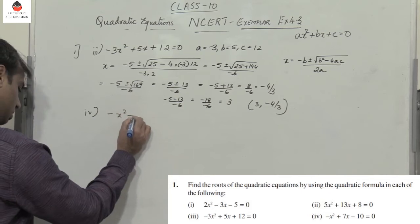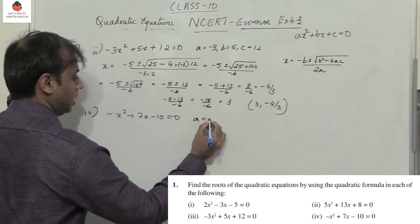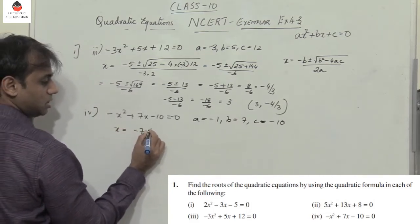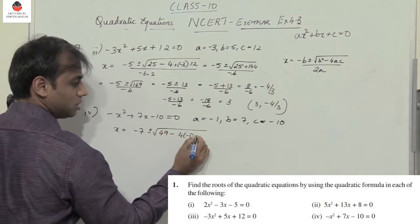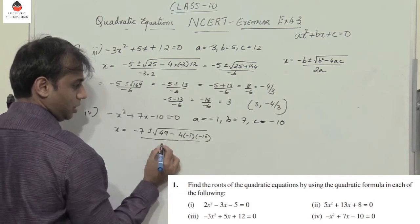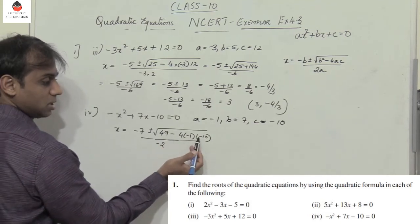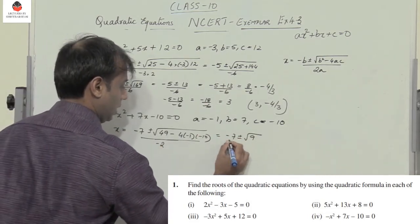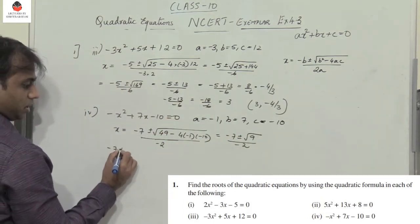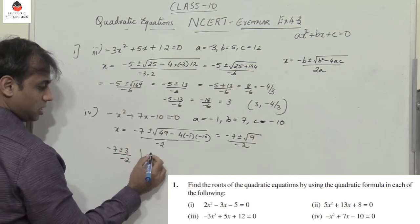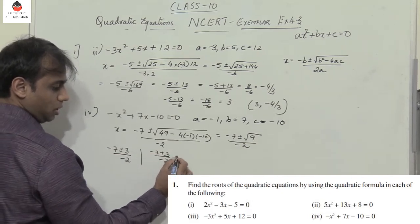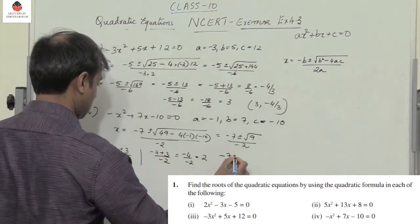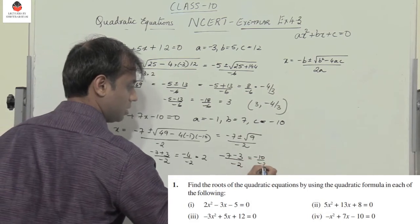Fourth equation: minus x² plus 7x minus 10 equals 0, so a is minus 1, b is 7, c is minus 10. Using the formula: x equals minus 7 plus or minus root of 49 minus 4 into minus 1 into minus 10, divided by 2 into minus 1 which is minus 2. Three minus signs keep the value negative: 49 minus 40 equals 9, giving minus 7 plus or minus 3 by minus 2. First value: minus 4 by minus 2 equals 2. Second value: minus 10 by minus 2 equals 5. The two roots are 2 and 5.